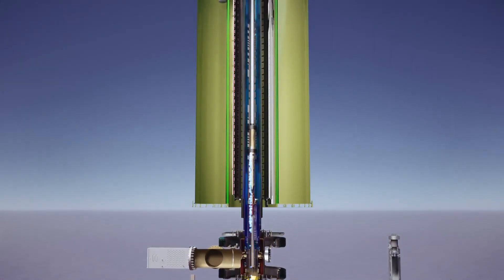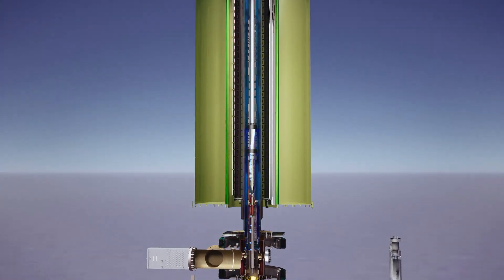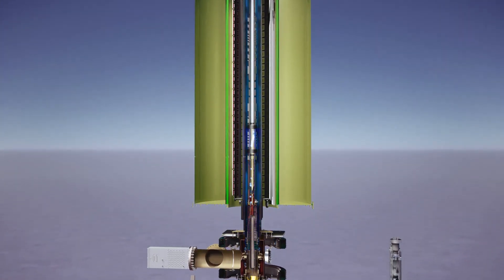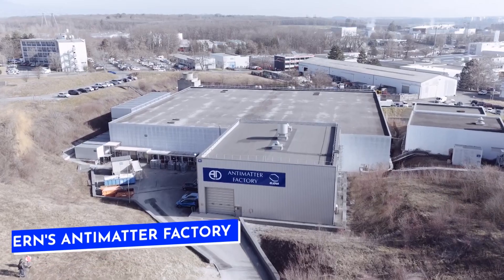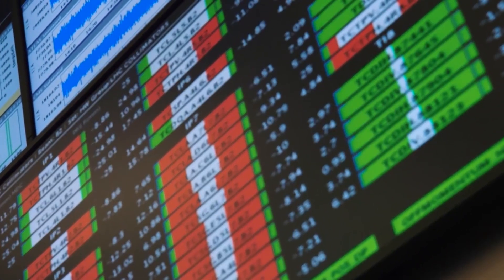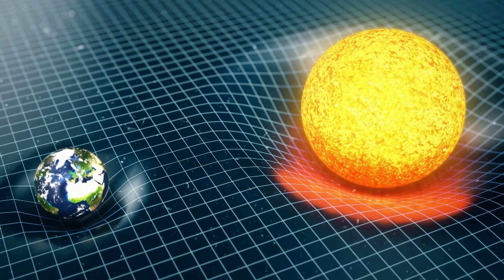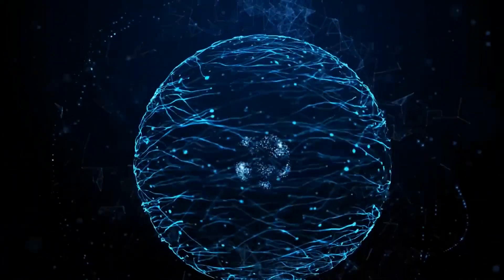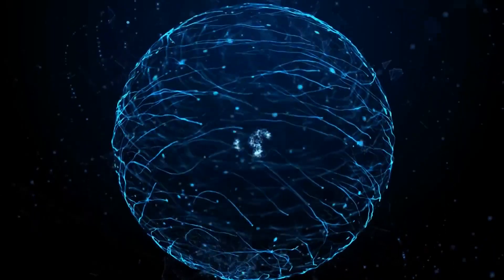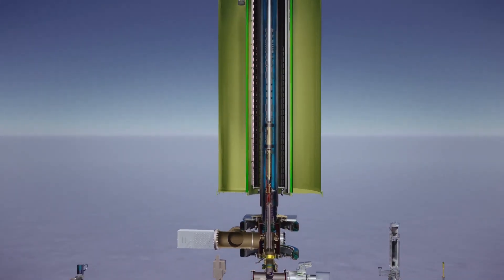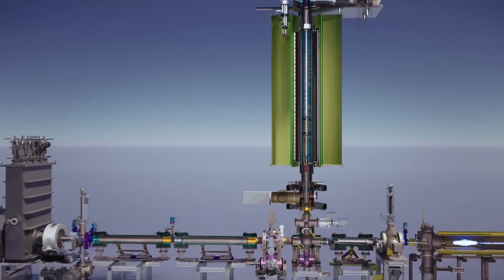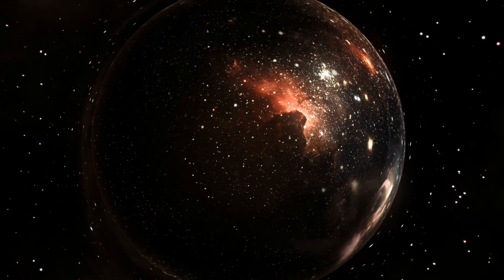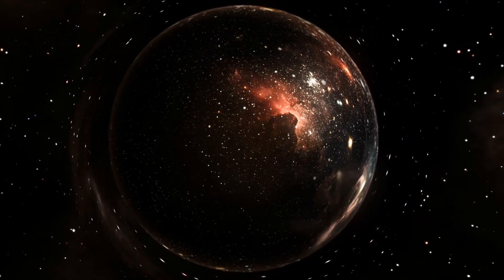Despite these efforts, only minuscule amounts of antimatter are produced annually. At CERN's Antimatter Factory, groundbreaking experiments have been performed, including studying antimatter's behavior under Earth's gravity and creating anti-hydrogen and anti-helium. These experiments are crucial for advancing our understanding of fundamental physics, exploring cosmological mysteries like the matter-antimatter imbalance, and paving the way for future technology and medical applications.